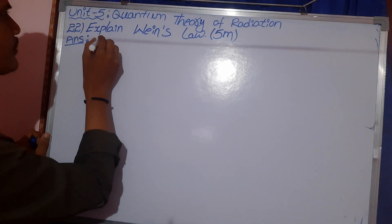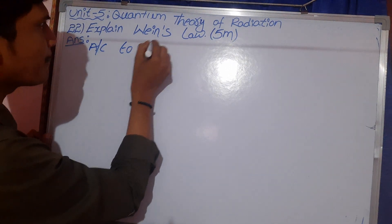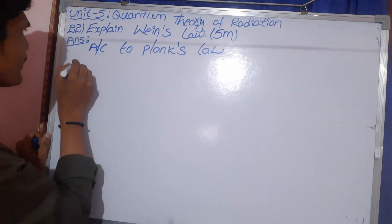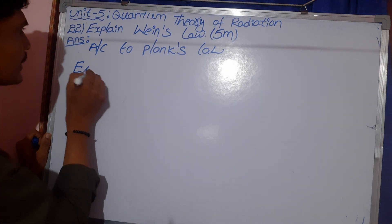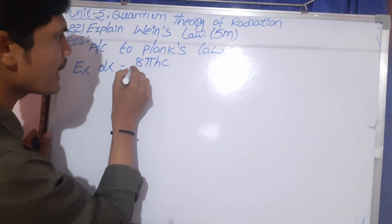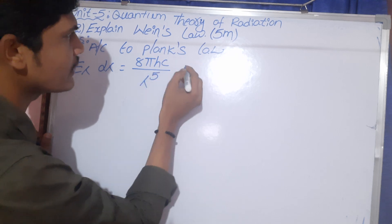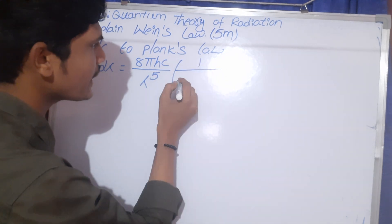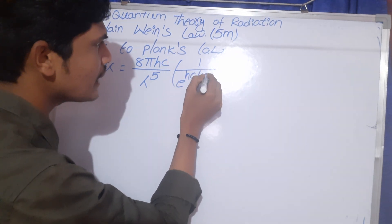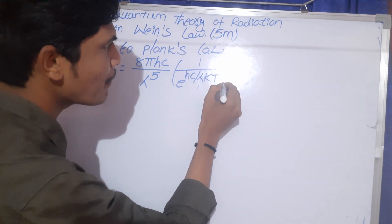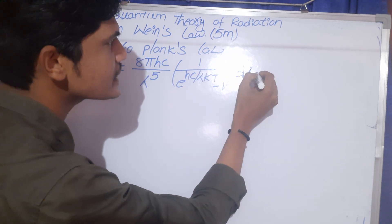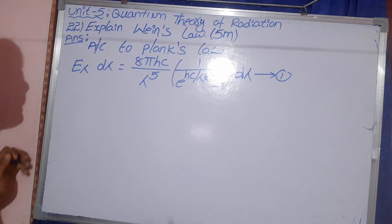So, according to Planck's law, E lambda D lambda equals 8 pi Hc by lambda power 5 into 1 by E power Hc by lambda Kt minus 1 into D lambda. So, this is equation number 1. This is the Planck constant law.